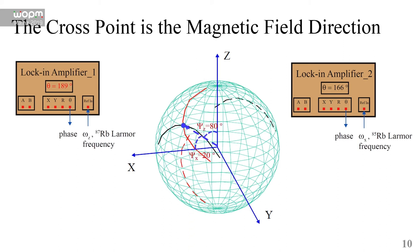Here ξz equals 80 degrees and ξx is 20 degrees. With ξz and ξx, we know the direction of the magnetic field.